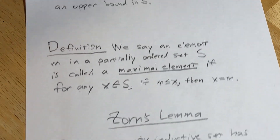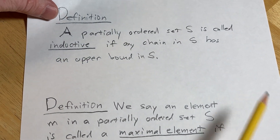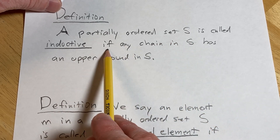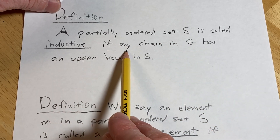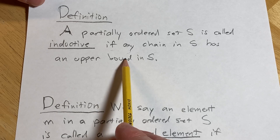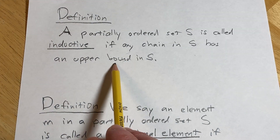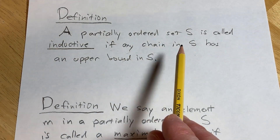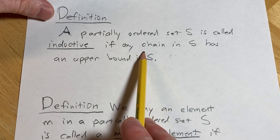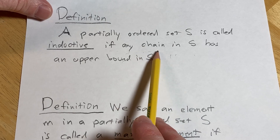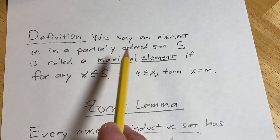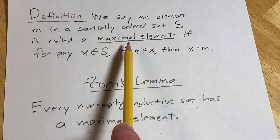So we have that here. Here is the definition of an inductive set: a partially ordered set S is called inductive if any chain in S has an upper bound in S. A chain is basically a totally ordered subset. So if every totally ordered subset — every chain — has an upper bound, that's the condition.